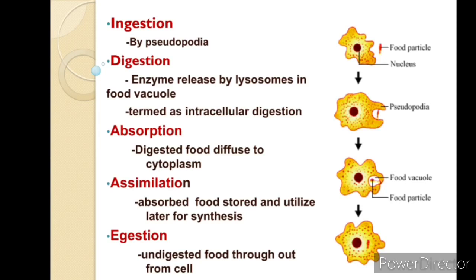For assimilation — this is the process of obtaining energy from absorbed food molecules. In amoeba, absorbed food molecules are utilized for producing energy required to carry out different life processes within the cell. For ejection — this is the process of excretion of undigested food material. In amoeba, this process is carried out by rupturing the cell membrane to remove undigested food material from its body.